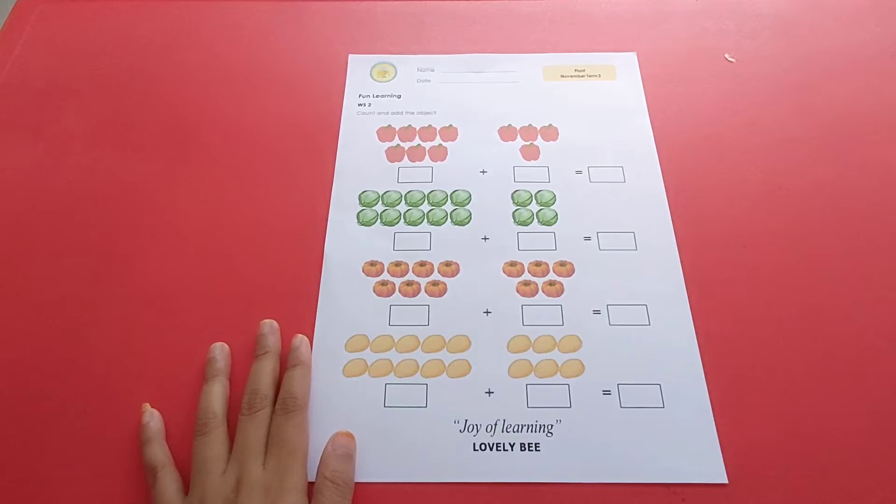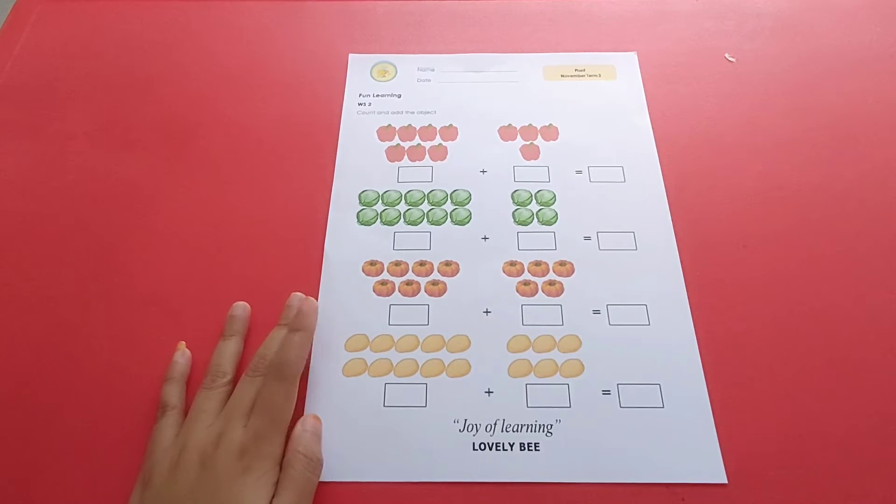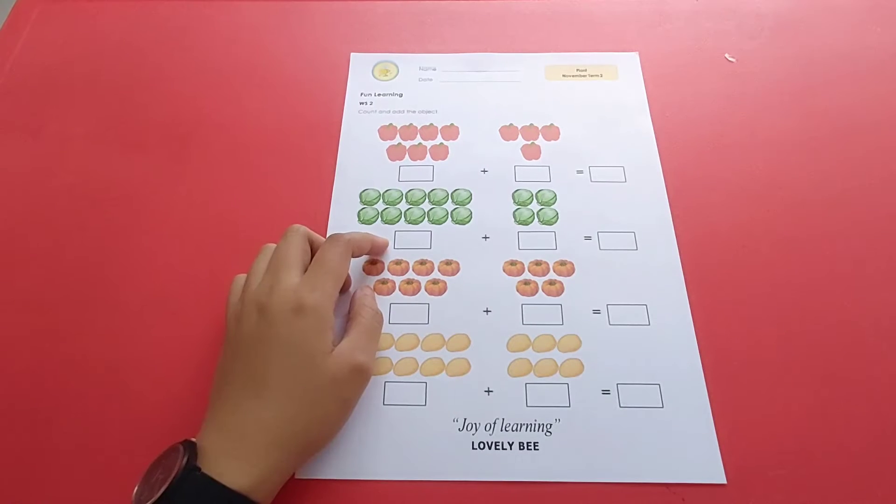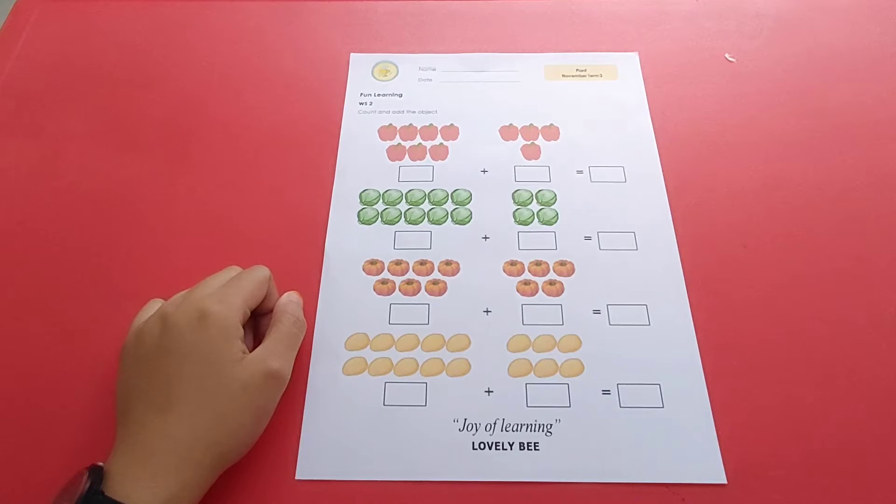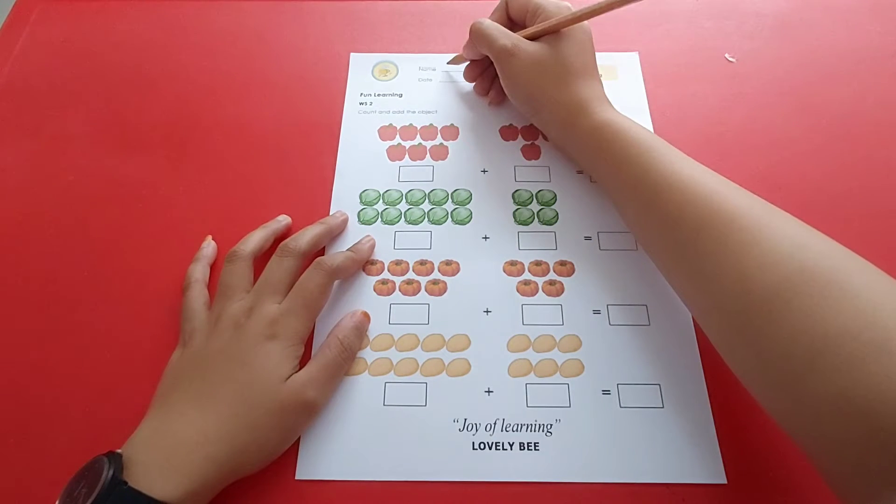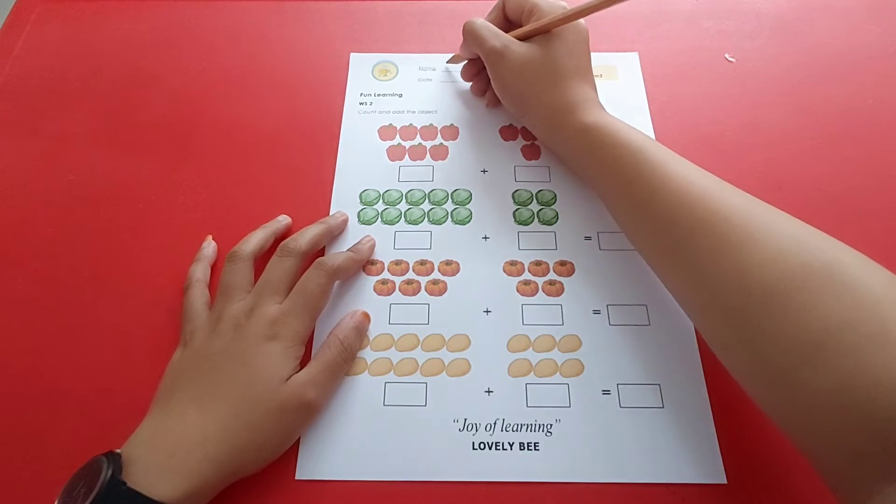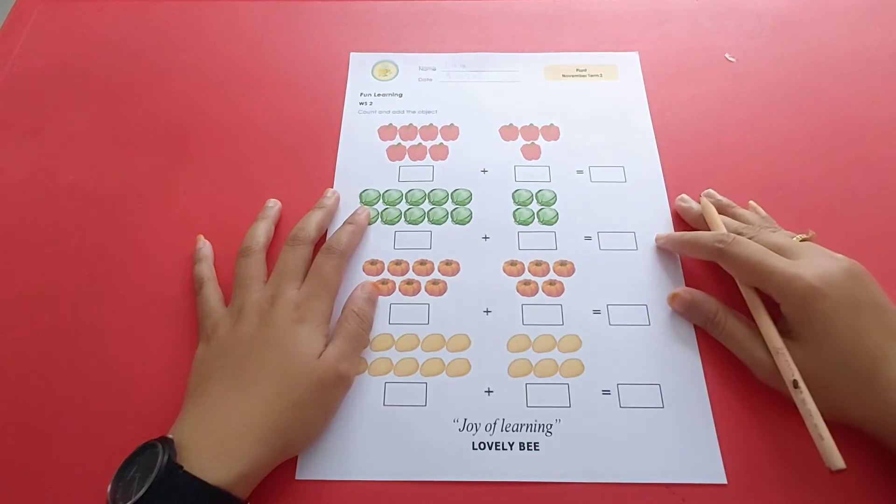Today's fun learning lesson, we will do this worksheet. You have to count all the plants and add them. But before we do the worksheet, let's write down our name and the date of today just like that.